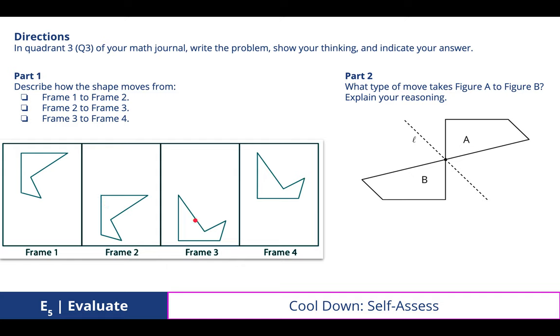Frame one to frame two is a vertical slide or vertical translation down. Frame two to frame three is a rotation counterclockwise and frame three to frame four is a vertical shift or vertical translation up.